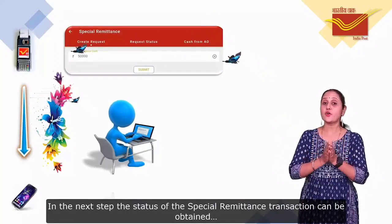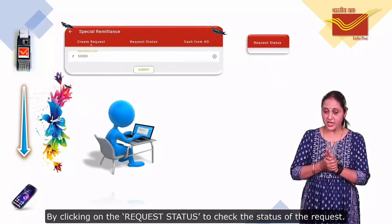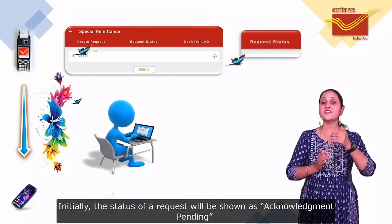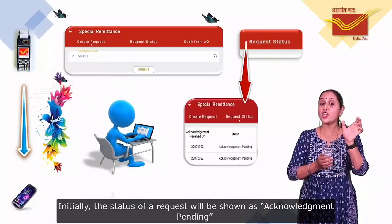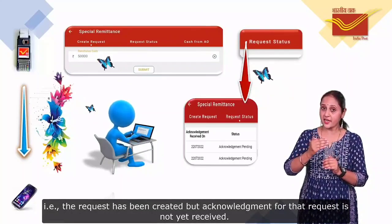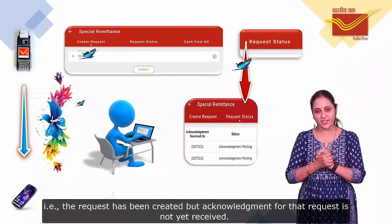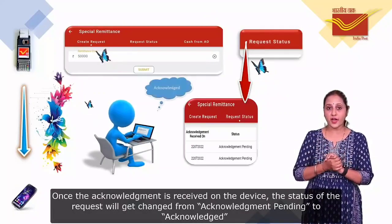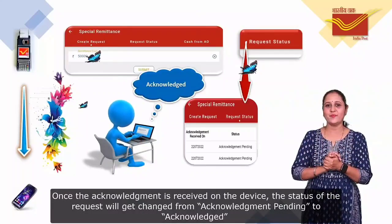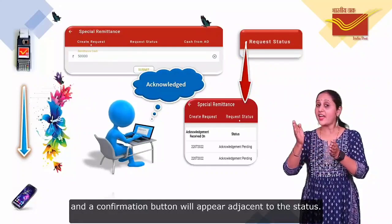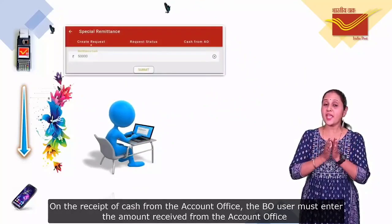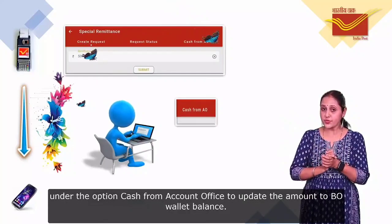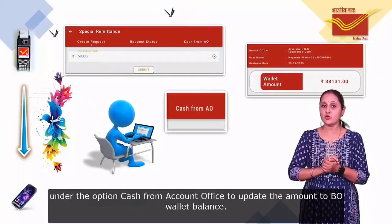In the next step, the status of the Special Remittance transaction can be obtained by clicking on Request Status to check the status of the request. Initially, the status of a request will be shown as Acknowledgement Pending — that is, the request has been created but acknowledgement for that request is not yet received. Once the acknowledgement is received on the device, the status will change from Acknowledgement Pending to Acknowledged, and a confirmation button will appear adjacent to the status. On receipt of Cash from the Account Office, the user must enter the amount received under the option Cash from Account Office to update the amount.